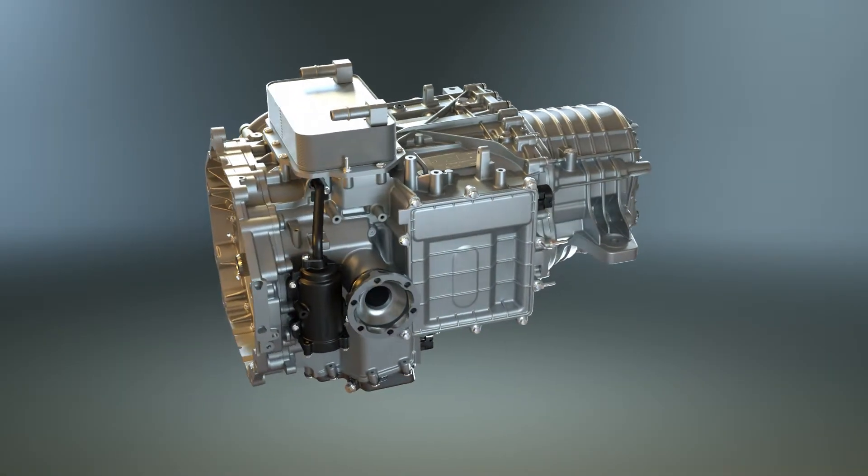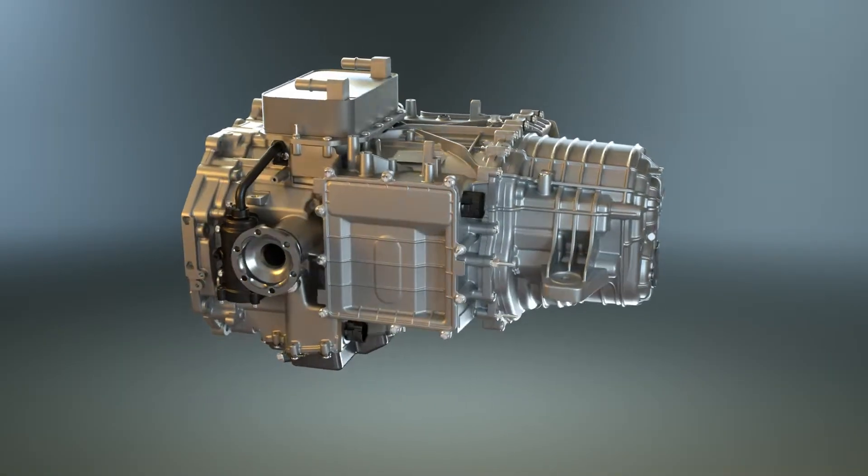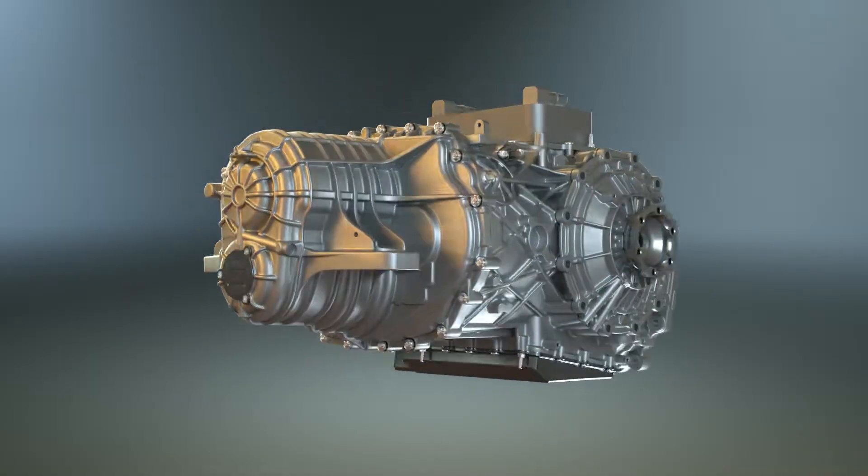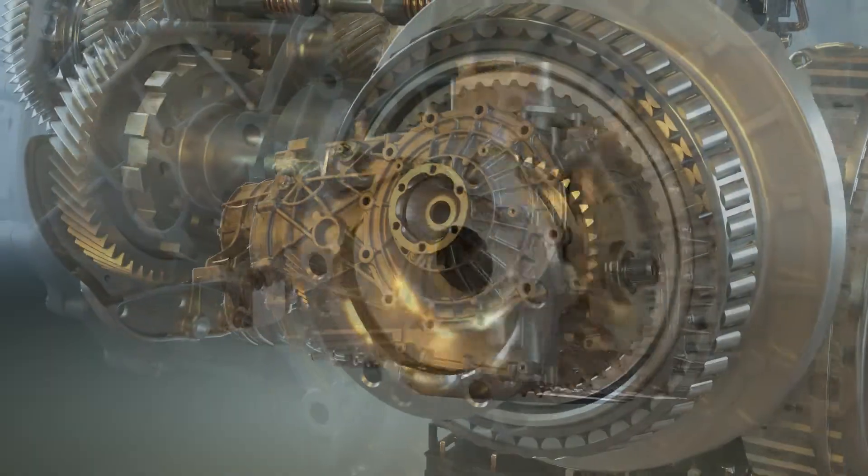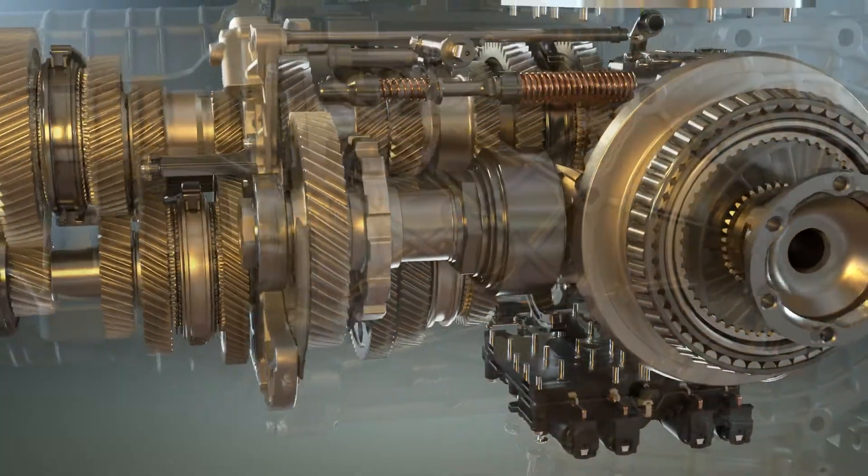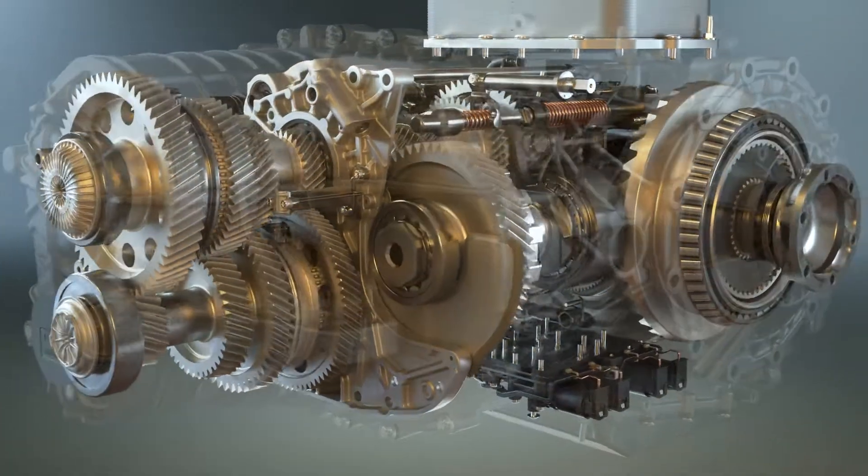Designed for high performance sports cars and supercars, the TR9080 DCT 8-speed dual clutch transmission is a transaxle drivetrain that combines the transmission, integrated limited slip differential and axle drive in one compact package.